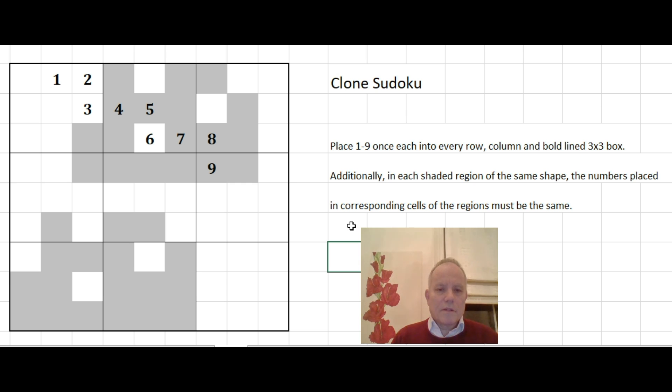So do understand what the rules are but do have a go at the puzzle. Pause the video now I'll have my go at it and see how it compares in terms of your solved puzzle. So the first thing I'm going to do is to fill in that four, five, seven, eight, nine from the grey shape up here. You have to always try and make sure you get them in the right place otherwise that destroys clone Sudoku.